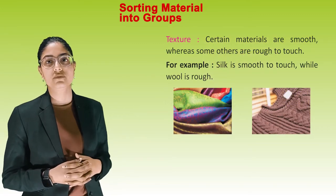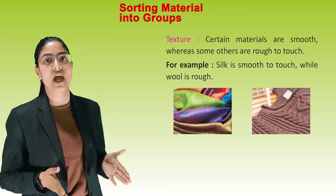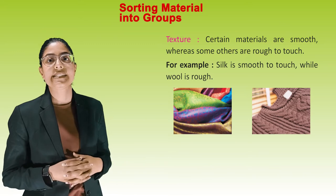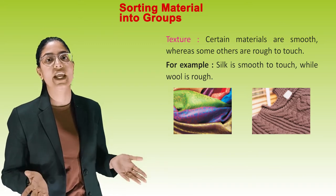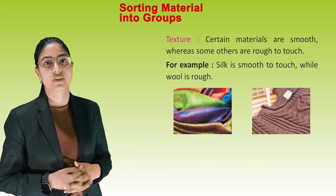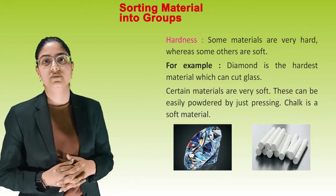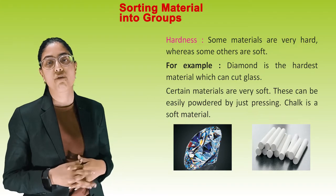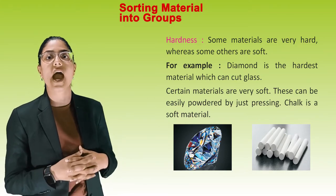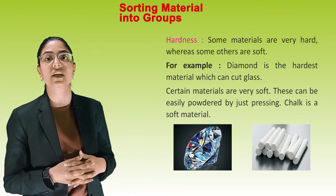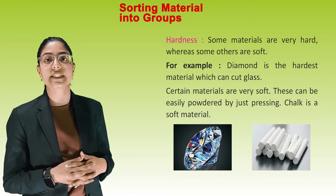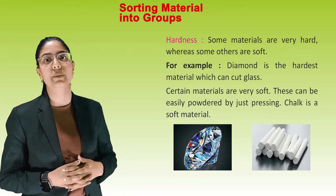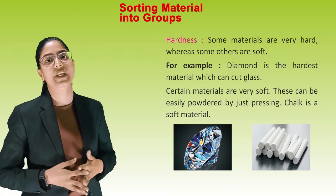Texture: certain materials are smooth whereas some others are rough to touch. For example, silk is smooth to touch while wool is rough. Hardness: some materials are very hard whereas some others are soft. For example, diamond is the hardest material and can cut glass. Certain materials are very soft and can be easily powdered by just pressing. Chalk is a soft material.